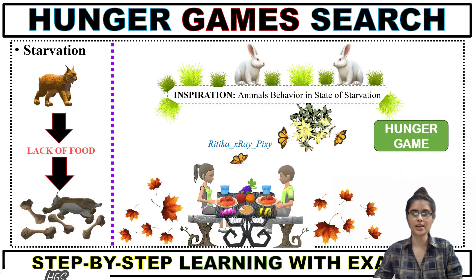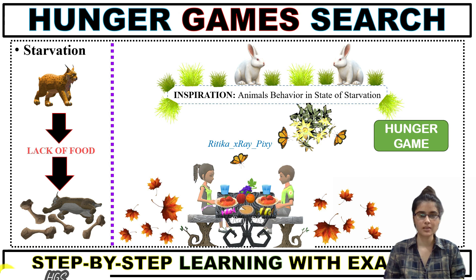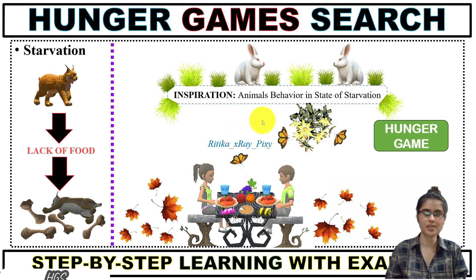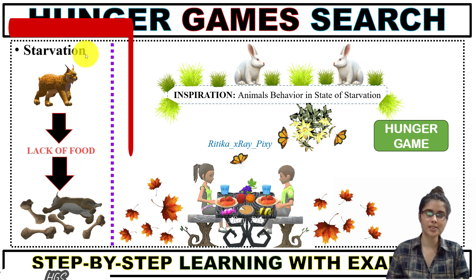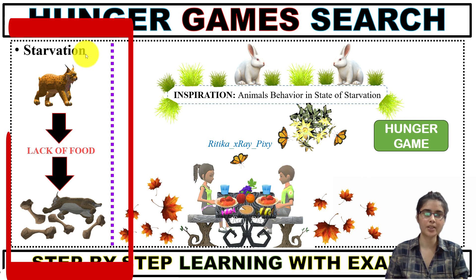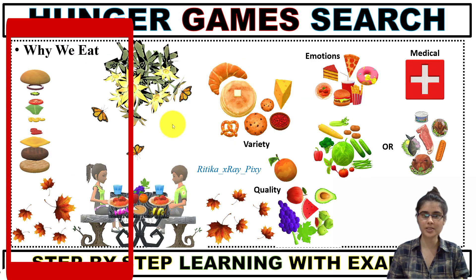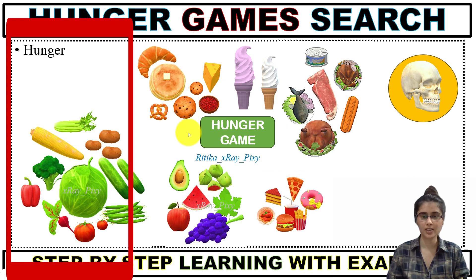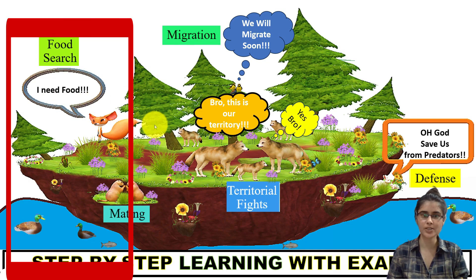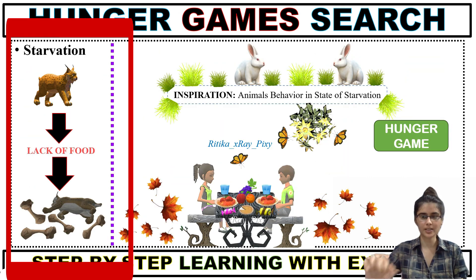Now we will try to understand how this algorithm works. The Hunger Game Search optimizer is inspired by animals' behavior in the state of starvation, described as a condition where animals have lack of food or no food for their survival, which can sometimes cause death. We will understand what hunger is, what starvation is, and the hunger game in nature — animals' behavior in the state of starvation.